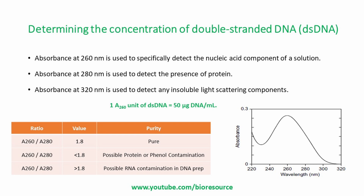When nucleic acid is purified from a biological source, calculating the ratio of readings obtained at 260 and 280 nanometers gives an estimate of how pure the nucleic acid preparation is. Pure DNA, free of any protein contamination, will have an A260/A280 ratio of 1.8. If the preparation is contaminated with phenol or protein, the A260/A280 ratio will be less than 1.8. If RNA contamination is present in the DNA prep, the A260/A280 ratio may be greater than 1.8.